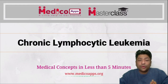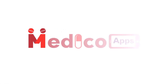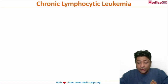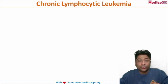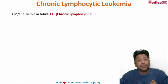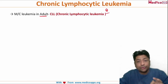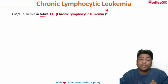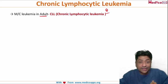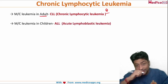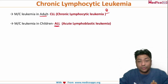In this Medico Apps Masterclass, we will talk about chronic lymphocytic leukemia. The most important point to remember is that it is the most common leukemia in adults — very frequently asked. Chronic lymphocytic leukemia, also called CLL, is the most common leukemia in an adult. The most common leukemia in children is acute lymphoblastic leukemia. These are two very important one-liners.